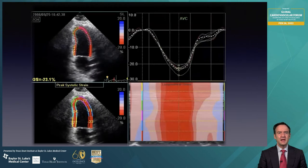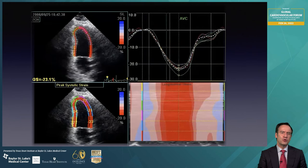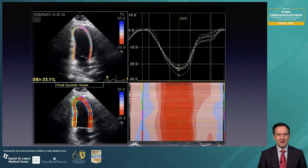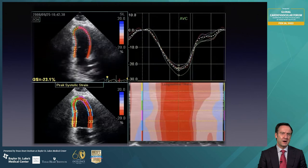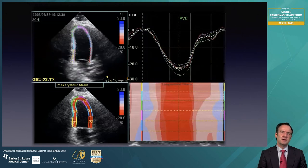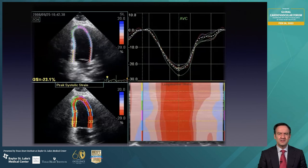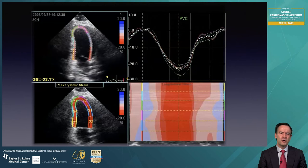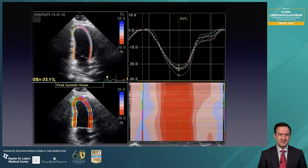In terms of the display of the strain, it's color-coded. You will see red if the strain is appropriate, and blue if instead of shortening you are having elongation. You can appreciate in the left lower panel individual strain scores for each segment of the heart. On the right side, you have the curves of deformation and the color M-mode, showing that all segments are achieving maximum deformation at the same time.